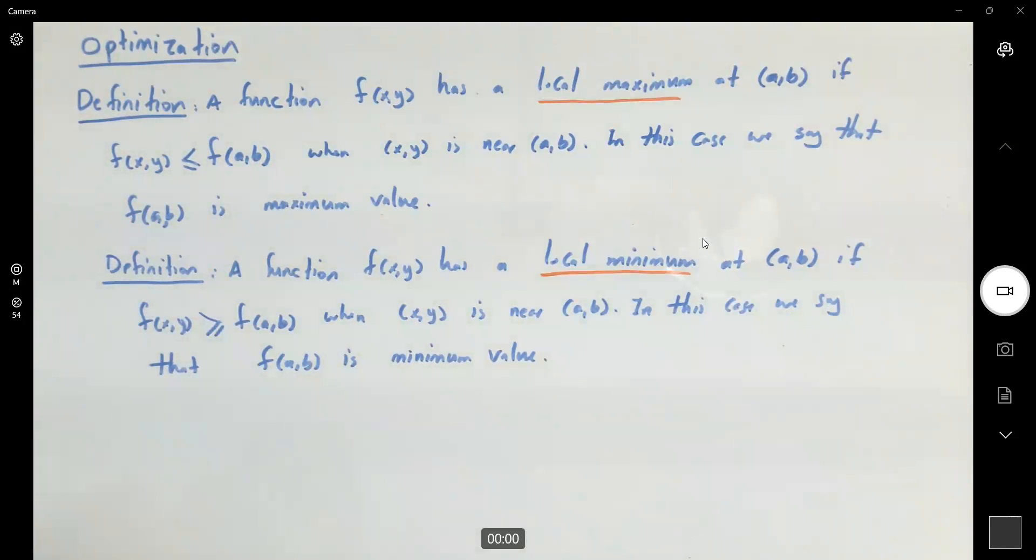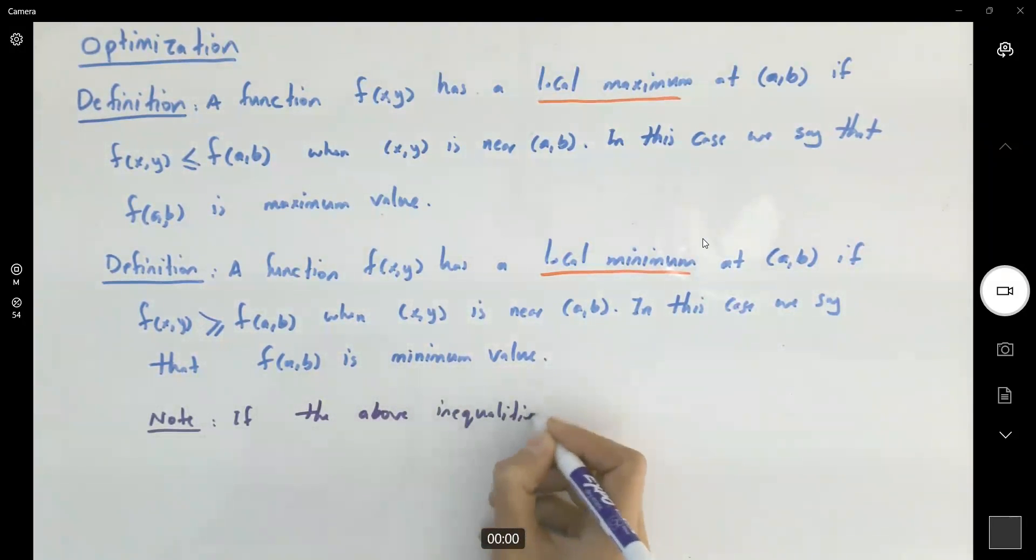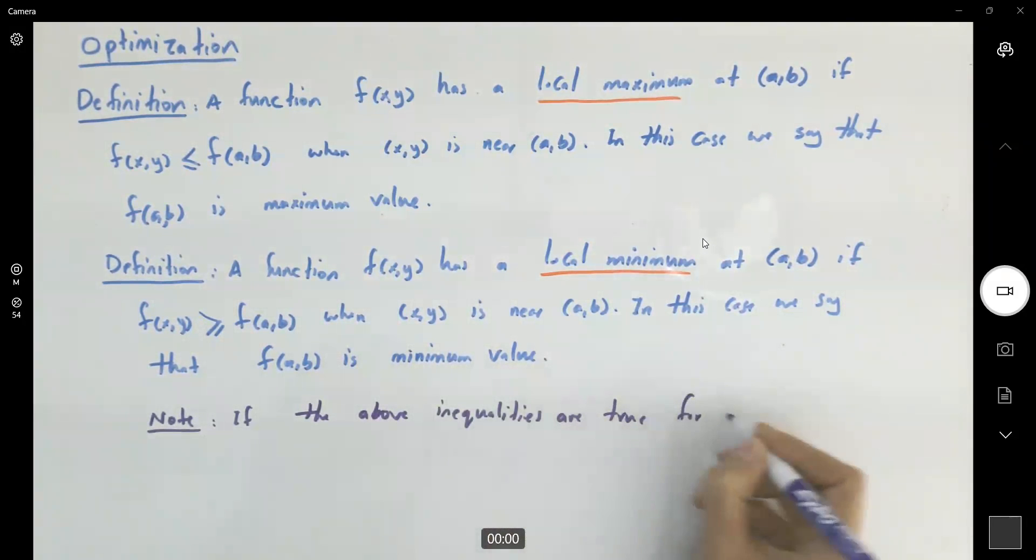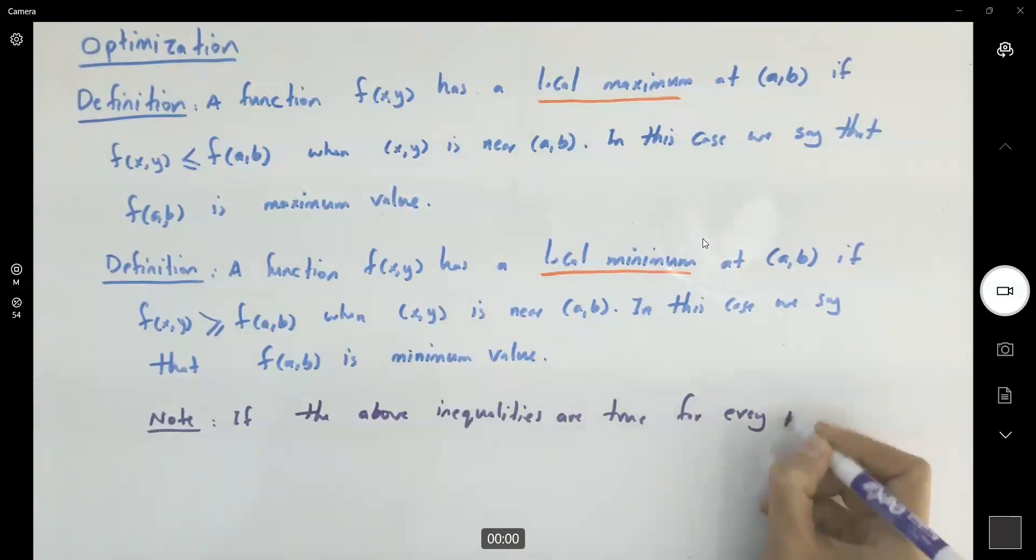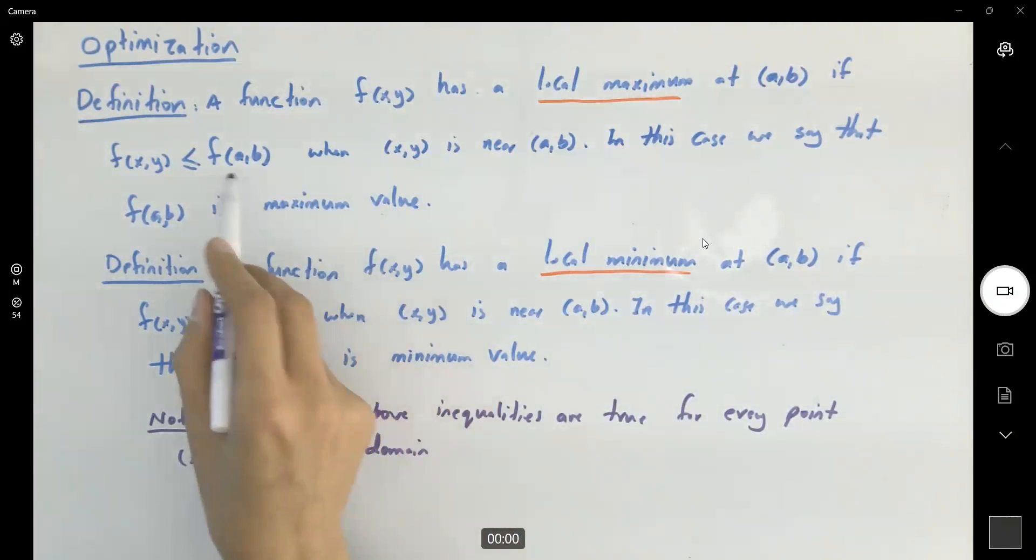Just a quick note for you: if the above inequalities are true for every point like x and y in the domain. So again, now we don't care if it's nearby a and b or not, all over the domain.